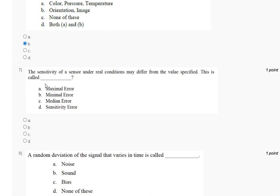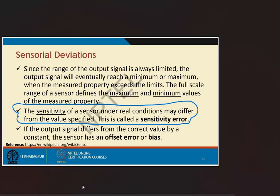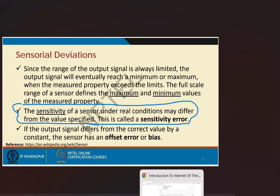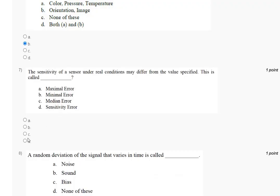Question seven: the sensitivity of a sensor under real conditions may differ from the value specified. This is called what? Options are: maximum error, minimum error, median error, or sensitivity error. The sensitivity of a sensor under real conditions may differ from the specified value — this is called a sensor sensitivity error. The correct answer to question seven is option D.